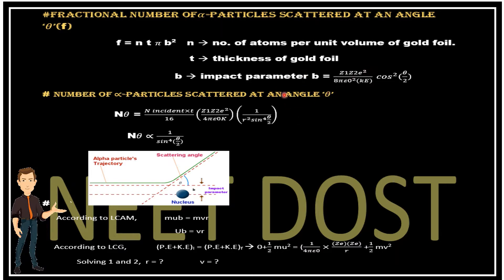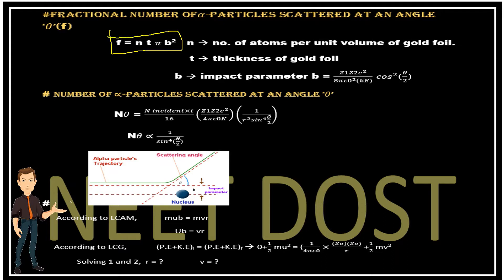Just remember this: they will directly give the impact parameter value, so we simply substitute it. The impact parameter formula is b = (z₁z₂e²)/(8πε₀ · KE · cos²(θ/2)). Remember the formula f = ntπb², where f is the fractional number of alpha particles scattered at angle theta, n is number of atoms per unit volume of gold foil, t is thickness, and b is the impact parameter.